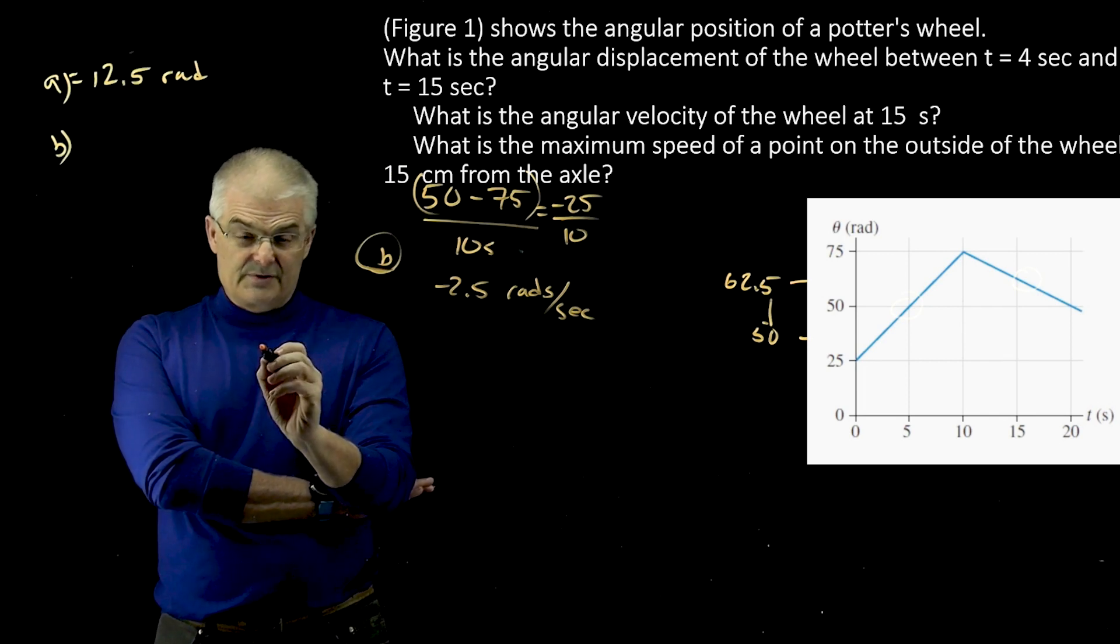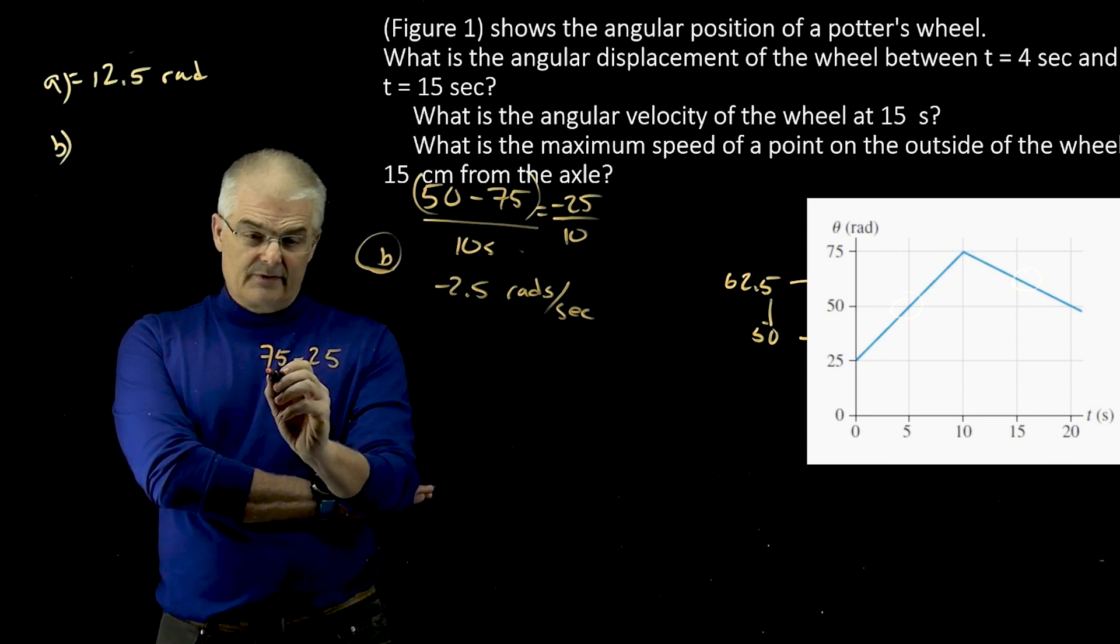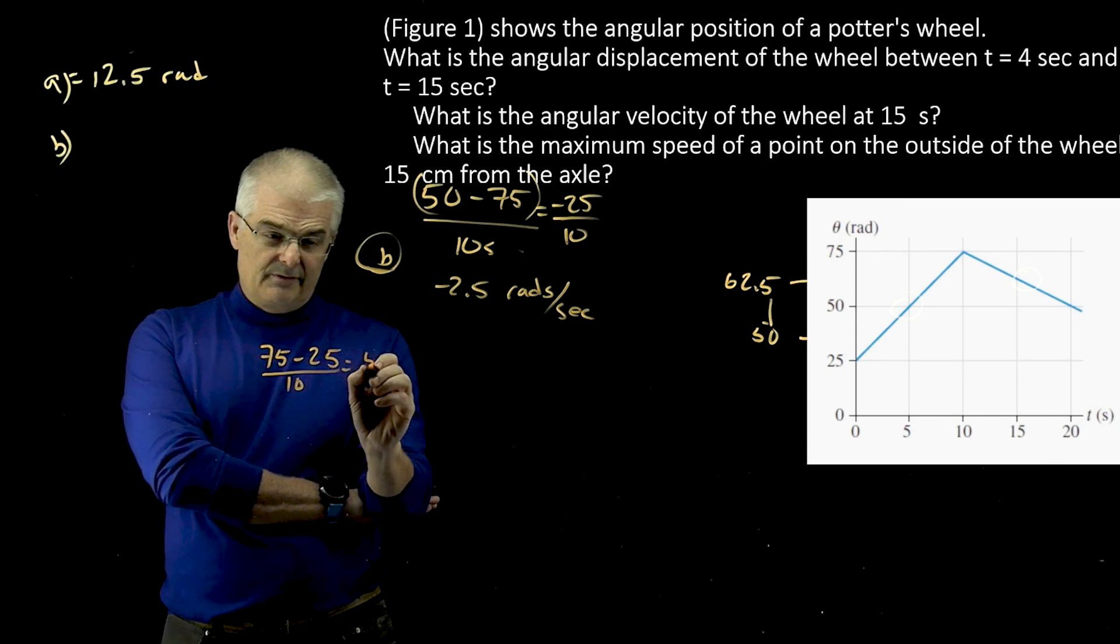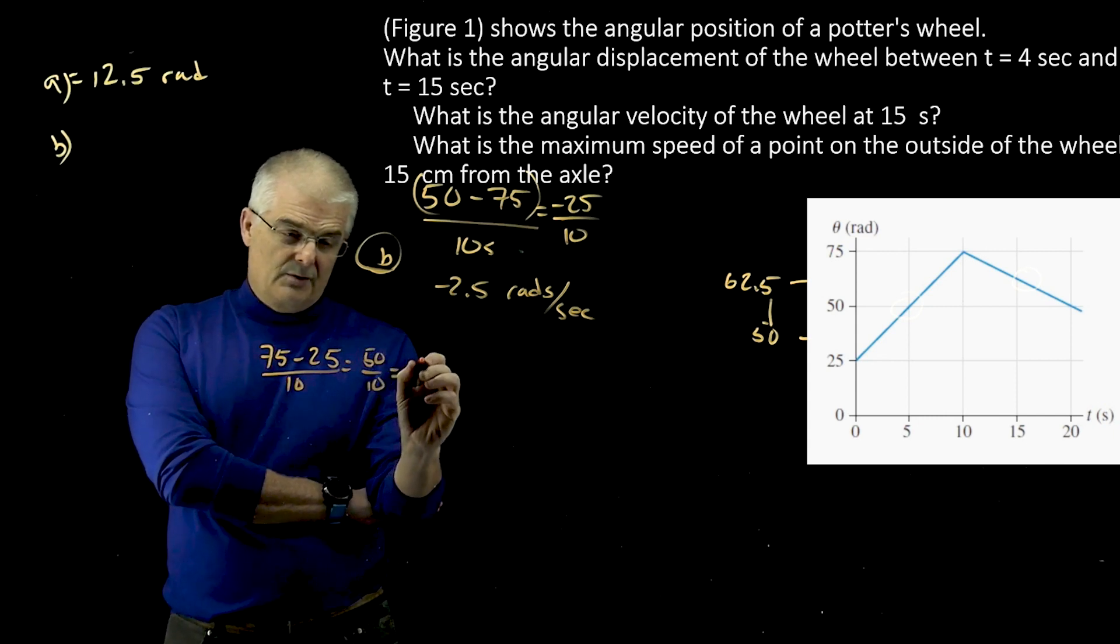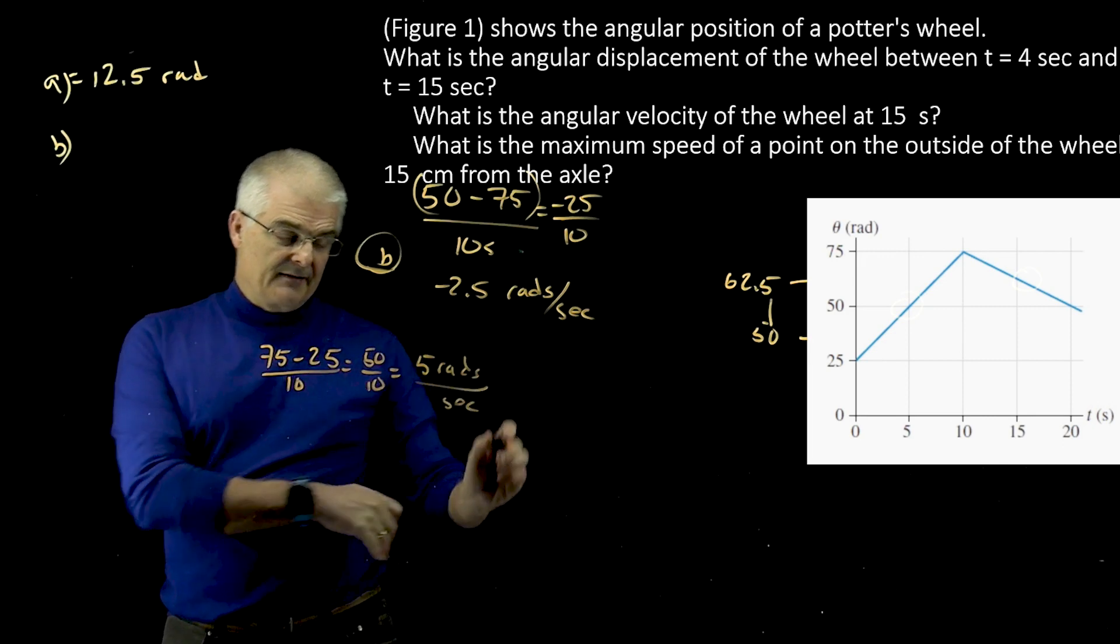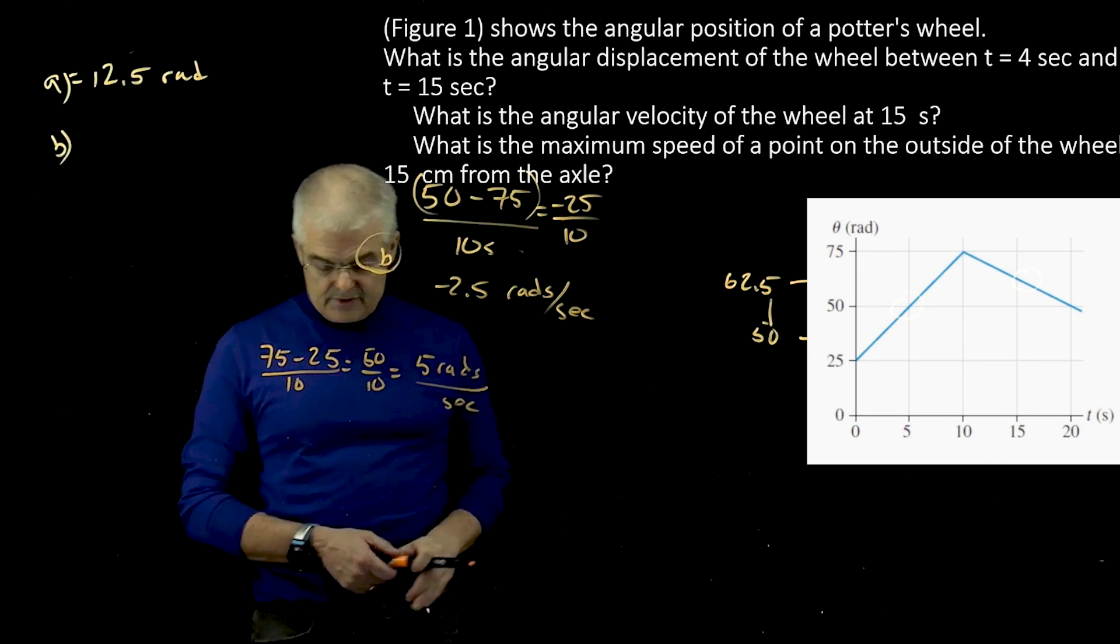So it's going to go from 75, rise over the run, so 75 to 25, that's 50 over, and that's 10 seconds, so that's going to be 50 over 10, which is 5 rads per second.